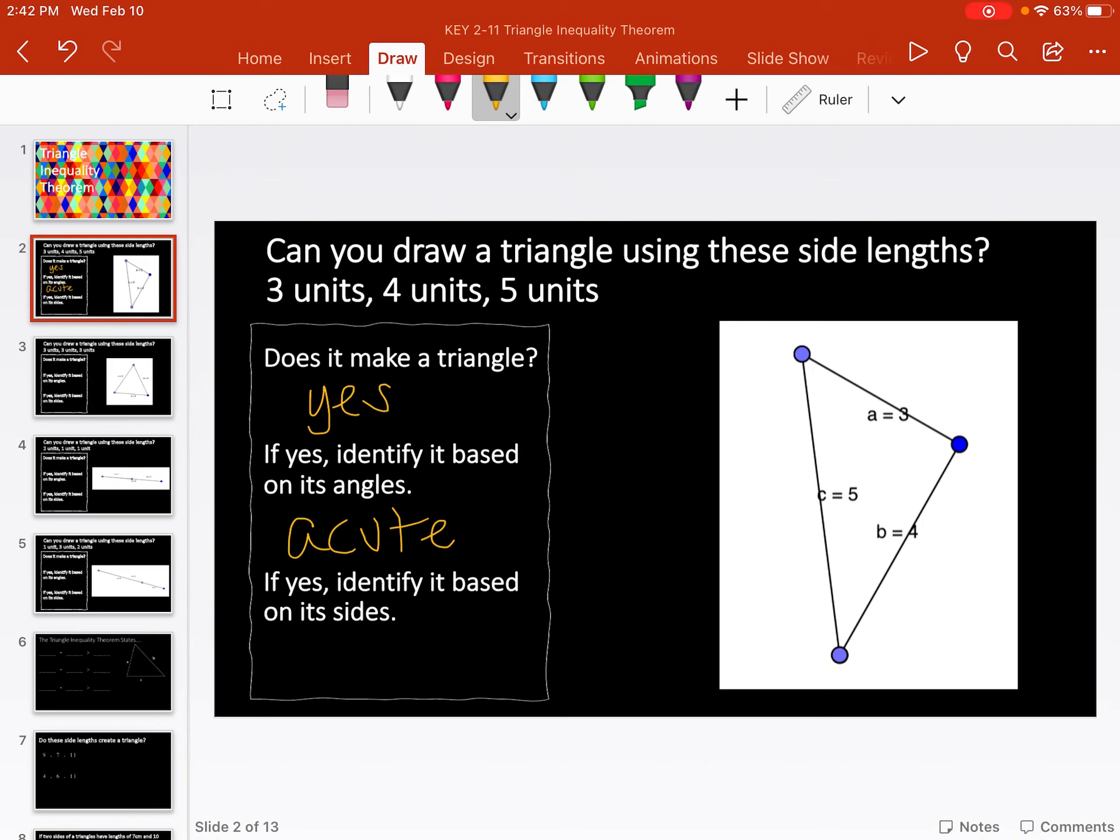And if we're identifying it by its sides, it's a 3, 4, 5. So all three side lengths are different. This is an example of a scalene triangle, where all three are different.